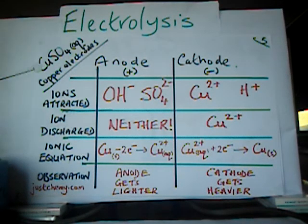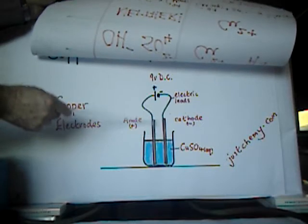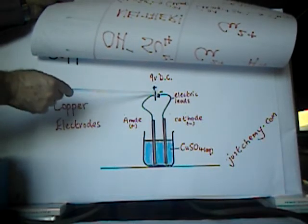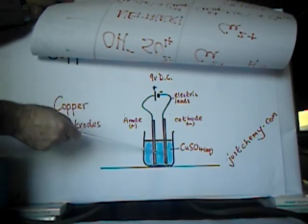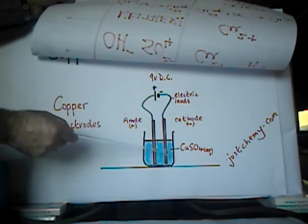So neither of the negative ions get discharged. It is the copper that makes up the anode that is the source of electrons that get pulled by the power source around here and then get pushed out towards here. And these electrons come around and build up on the cathode, making it negative.